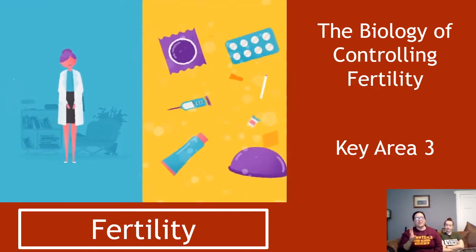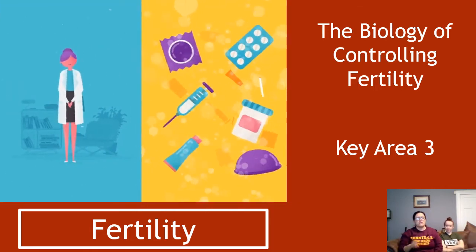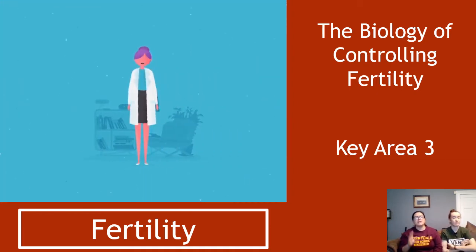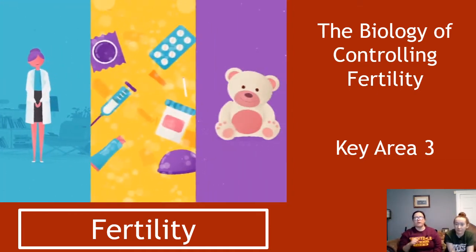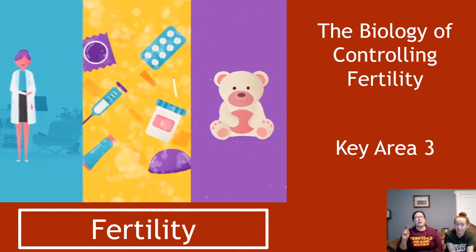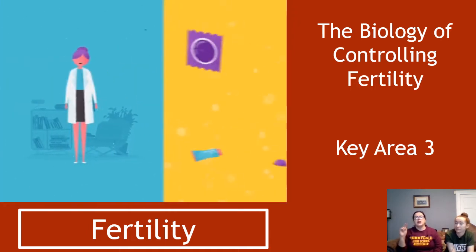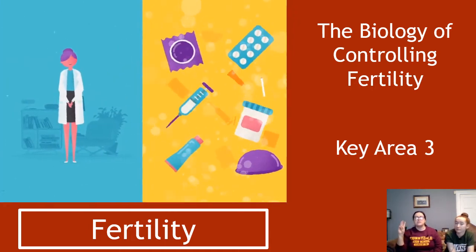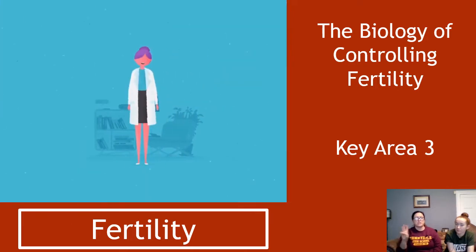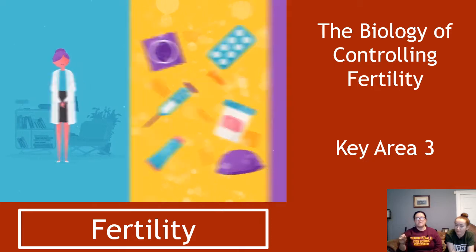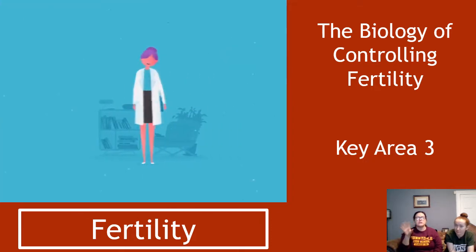This is key area three of unit two, physiology and health, of Higher Human Biology. There are three little videos for this: we're looking at fertility overall, then how to help someone get pregnant in infertility, and then how to stop someone getting pregnant — the third video which is about contraception. So here we're just going to look at the idea of fertility and infertility causes.